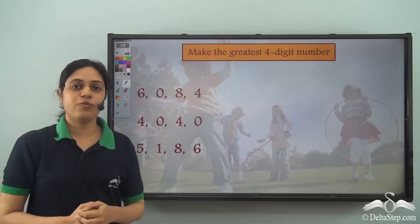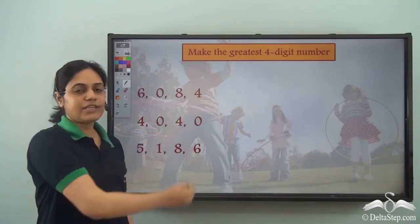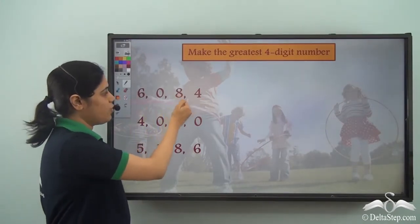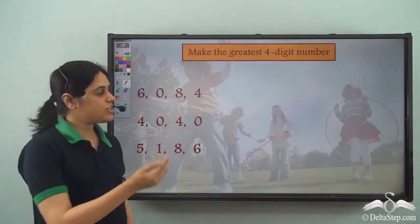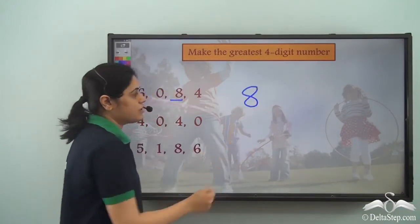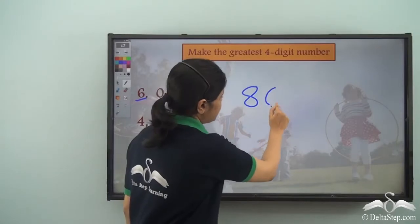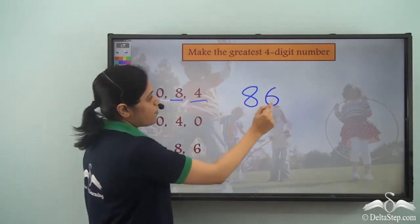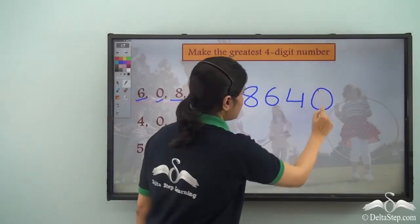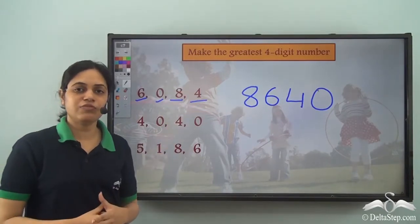Now let us form the greatest four-digit numbers. Using digits 6, 0, 8, 4 — the highest digit is 8, then 6, then 4, then 0. So 8640 is the largest four-digit number you can make using these four digits.